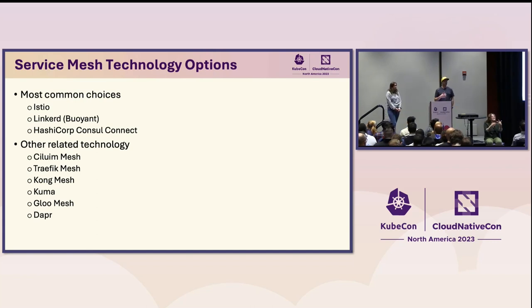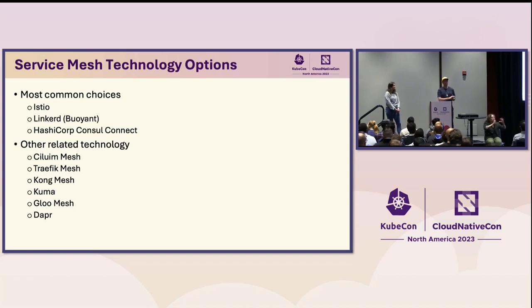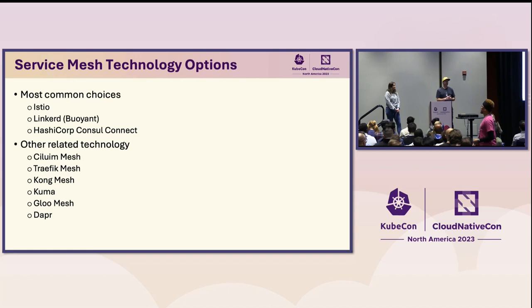There are three most commonly chosen platforms. We hear a lot about Istio, probably one of the early solutions. Linkerd is one of my favorites — the Buoyant company maintains that. HashiCorp has Consul Connect as well. In general, those three typically have mostly the same core features. Some technologies like Kong Mesh may have started as an API gateway and then became more like a service mesh. My advice: look closely at your requirements. Don't just use the one you hear the most about — look into what they actually offer and how it fits with what you're doing, because you may only use a fraction of the features.